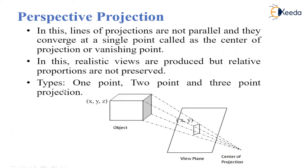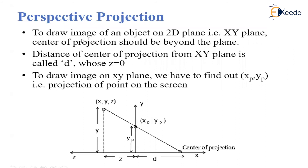Perspective projection can be of three different types: one-point, two-point, and three-point perspective projection. To draw the image of an object on a 2D plane (the XY plane), the center of projection should be beyond the XY plane. We have to find the coordinates of the object being displayed onto the view plane. The center of projection is here; this is our view plane and this is our original object.